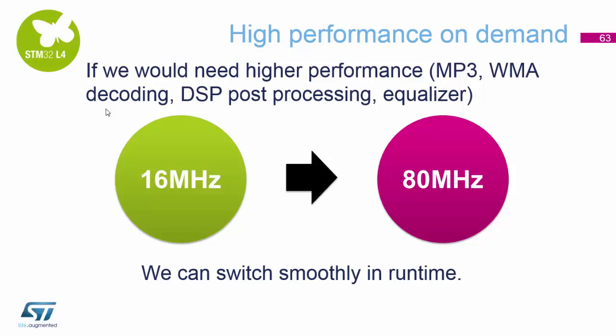The reason we ran at 80 MHz originally is because we didn't know what type of audio processing the application would require. If you're doing MP3, WMA, or graphic equalization, you might need 80 MHz. But you can now seamlessly switch between 16 and 80 MHz in software, so it doesn't take much to change the processing speed to match the demands of the application.